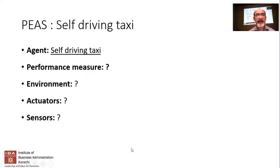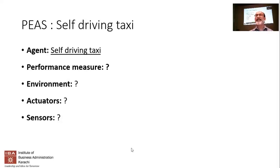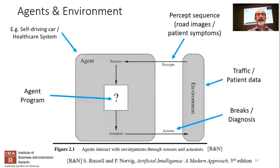A student points out that P meant perception in the last slide but now means performance measure. That's a slight terminology shift — in the standardized way, P is performance measure and perception is referred to now under sensors. In the previous slide we talked about the environment, sensors coming in, and actuators going out; now we've added performance measure as well.